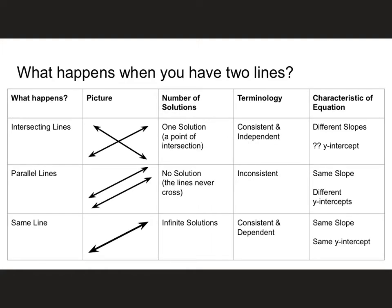So just to remind you, this is what happens when we have two lines on a plane. We can have lines that intersect, lines that are parallel, or the same line. I've given you a picture of what each of those look like. Intersecting lines cross, parallel lines never intersect, and the same line is like a line over top of itself.